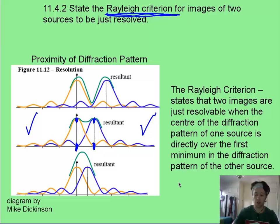And here it is written out. Write this down, memorize it: the Rayleigh criterion says they're just resolvable in the center of the diffraction pattern of one source, directly over the first minimum pattern of the other source.